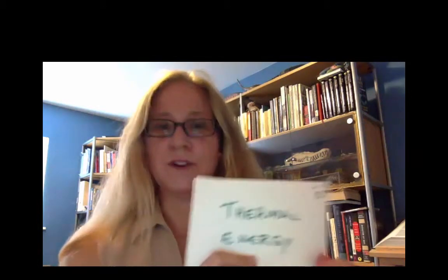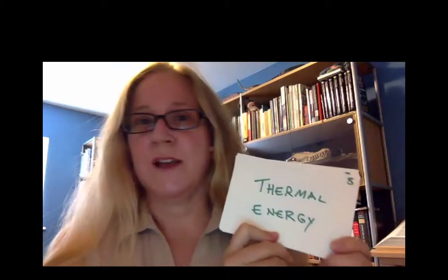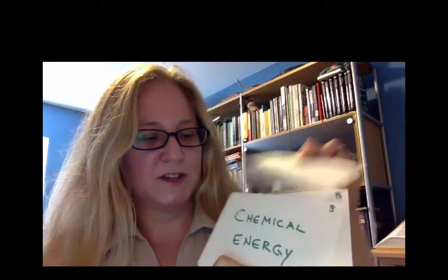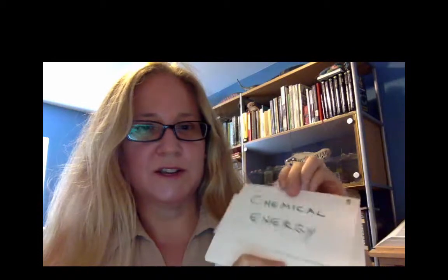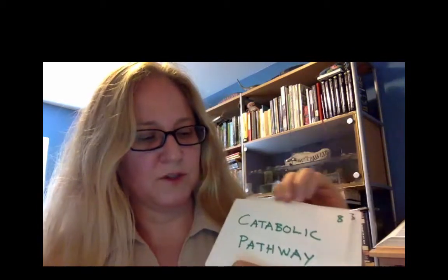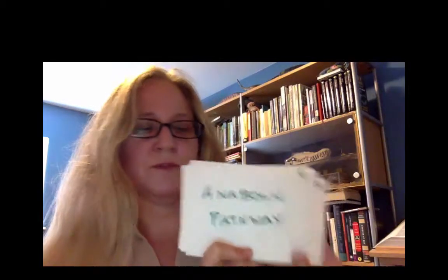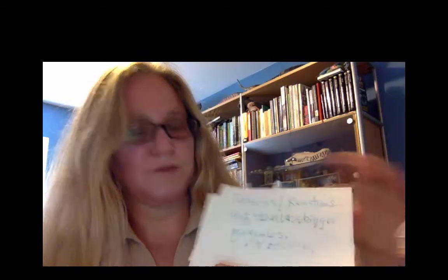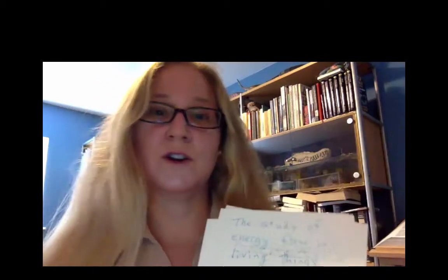For example, here I have thermal energy as an example. Notice that on my card I also include the chapter number. I've got potential energy, chemical energy, metabolism — which is the whole concept of that chapter — catabolic pathway, anabolic pathway, and on the reverse I have the definitions. Notice they're short — just a few words, five or six words at most, short simple definitions.